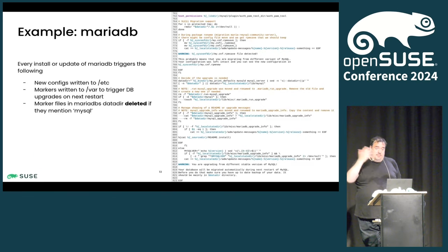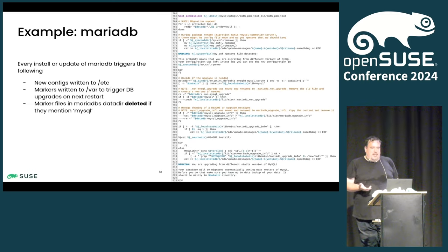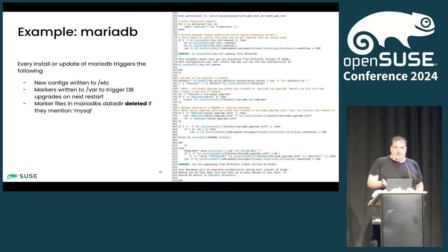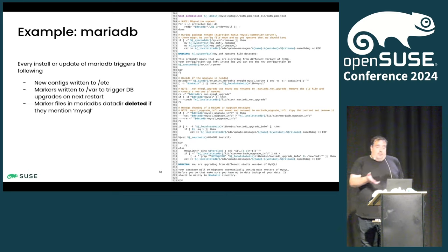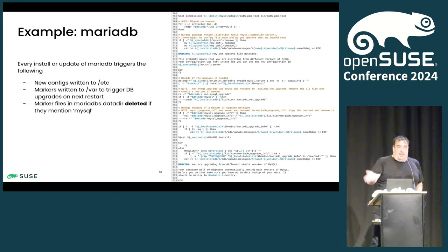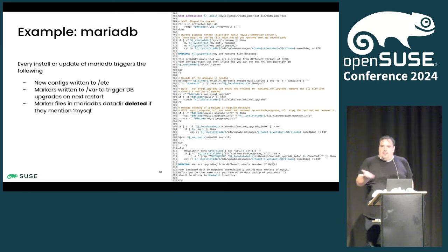Here's an example of a rather long RPM post-script that's a little bit on the scary side. Every time MariaDB gets updated or installed, new config is written to /etc. Markers get written into the var partition to trigger database upgrades on your next restart — so you restart your service and suddenly it wants to do a database upgrade instead. And marker files that mention MySQL just get randomly deleted if they happen to be in the same place. That's fine if you're running a system that only has MariaDB, but what if you're running this against shared storage? That might not be great behaviour.